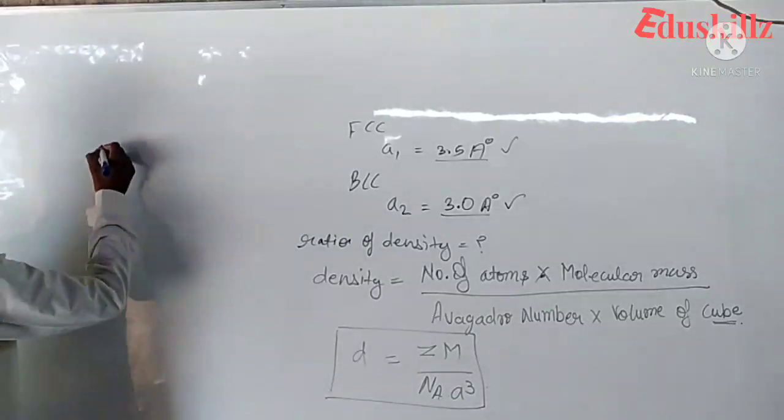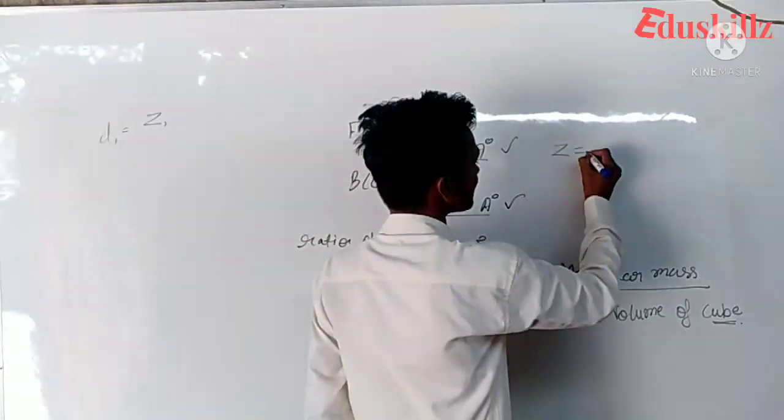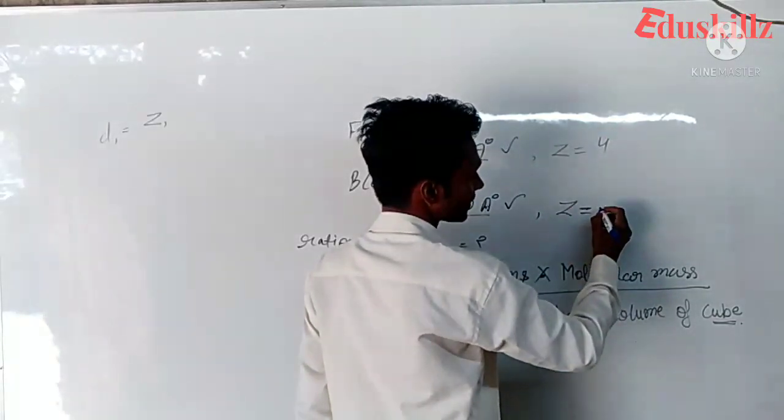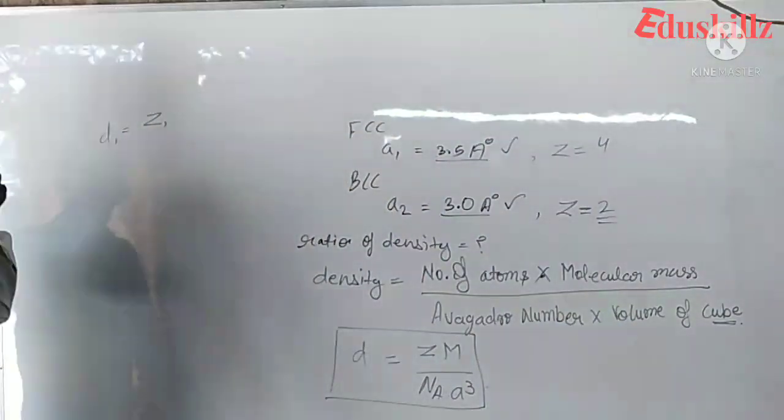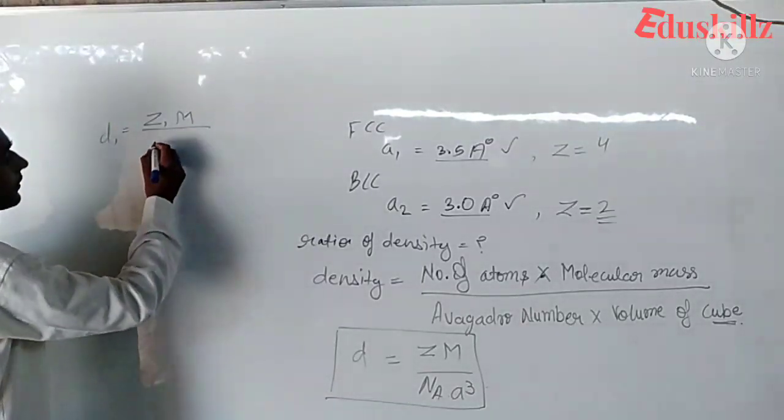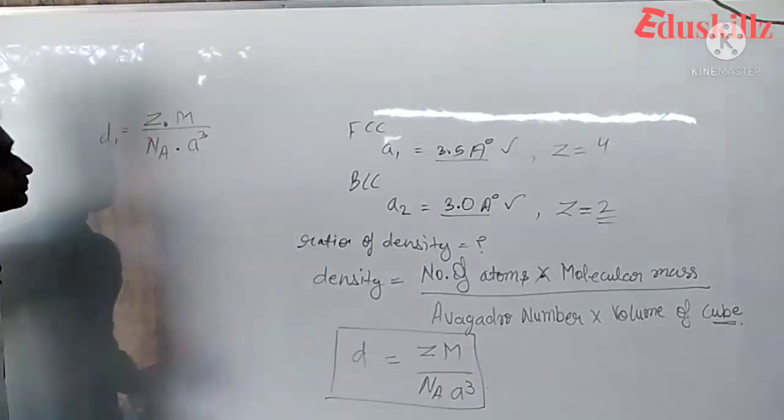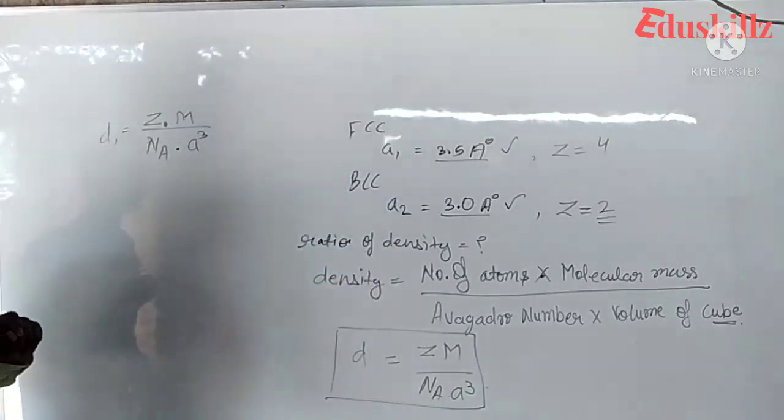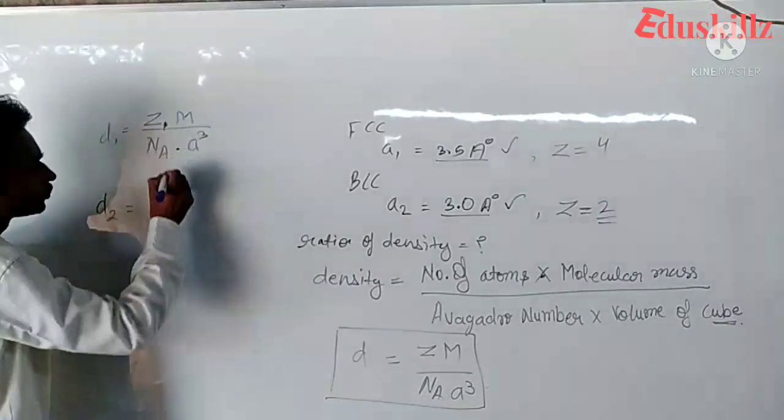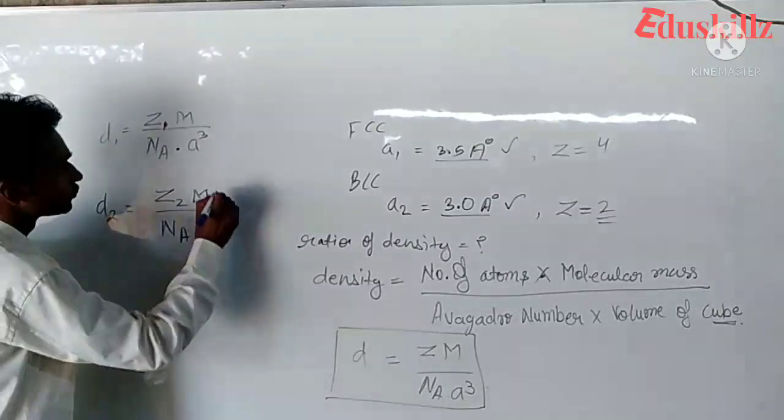The density of FCC is equal to Z1 times m upon NA times a1 cubed. Because we know that in FCC case, Z is equal to 4. And in BCC case, the density is equal to Z2 times m upon NA times a2 cubed, where Z2 equals 2.